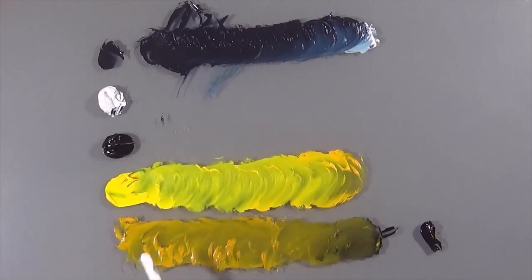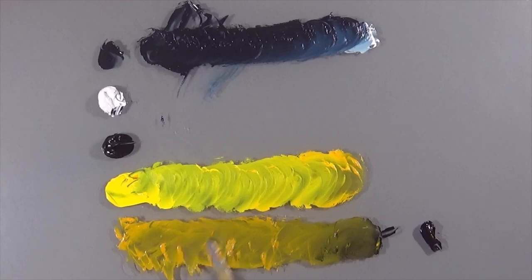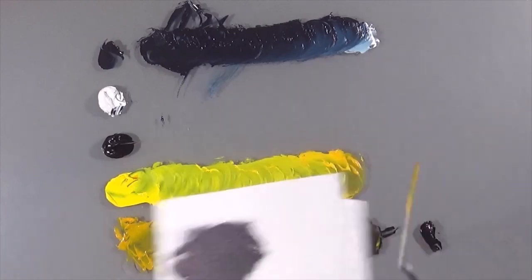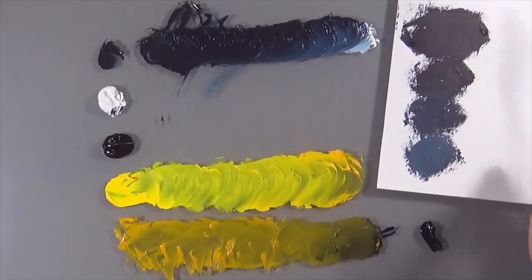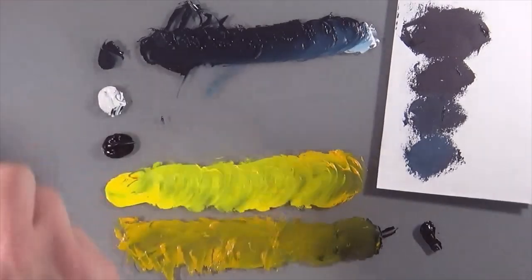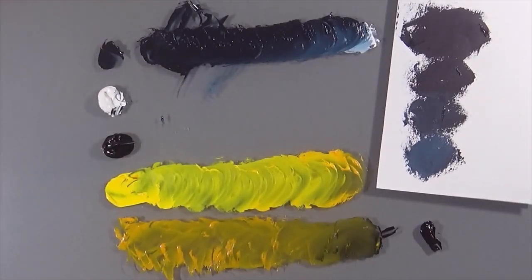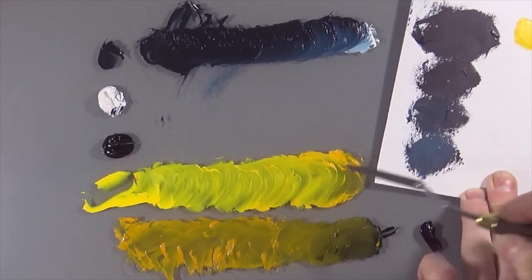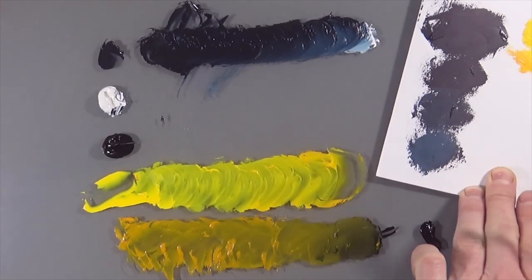So there we go. I haven't put a lot of the color out, but that gives you the idea. Now these are all quite transparent colors. But as you'll see here if we just bring the piece of paper back in, we're running from the yellow through to the orange on the one.